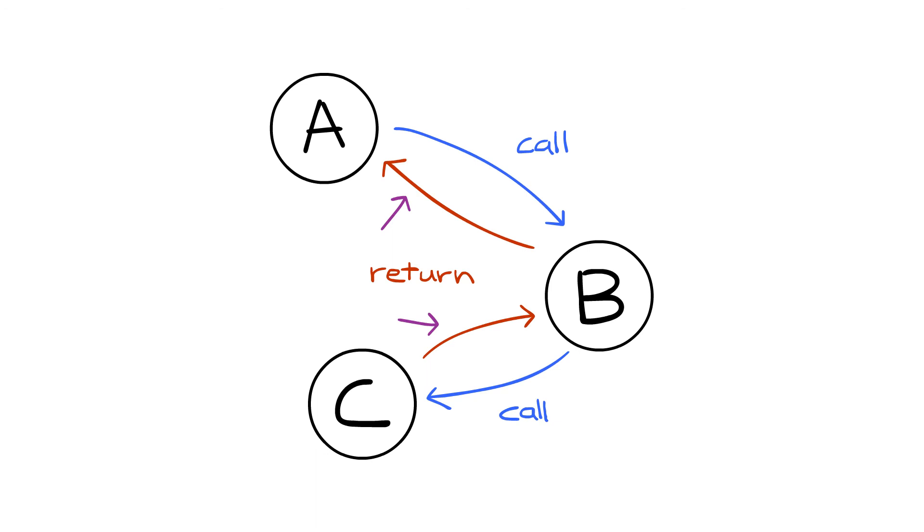But why do return edges depend on return addresses? It seems like it would be easier if they were also protected like the forward edges. That way, buffer overflows wouldn't be able to overwrite any return address because there would be none. Unfortunately, because of the way functions work, this is just not possible.